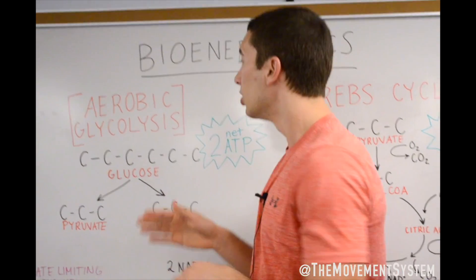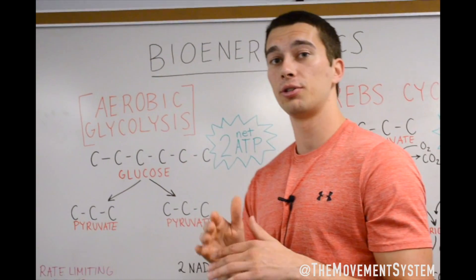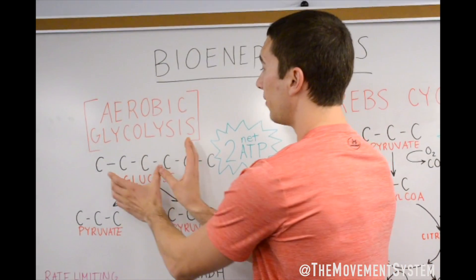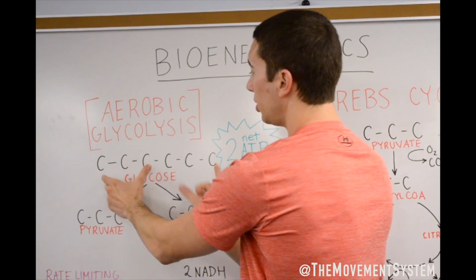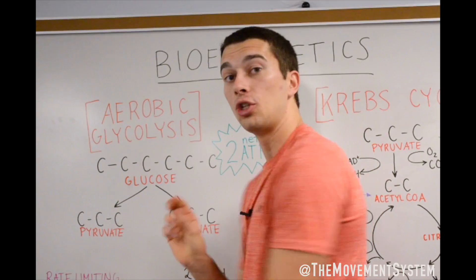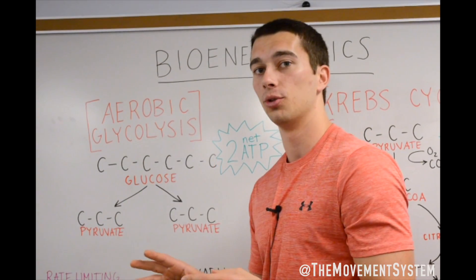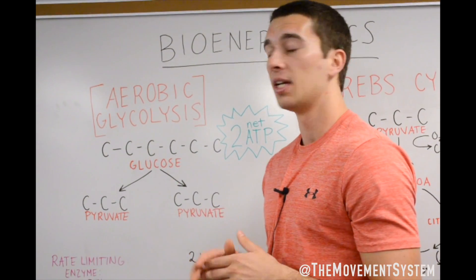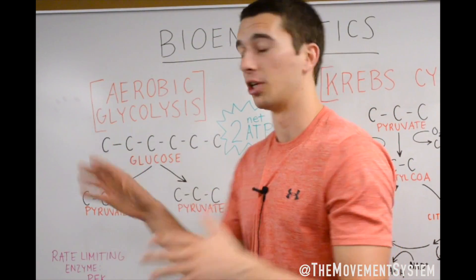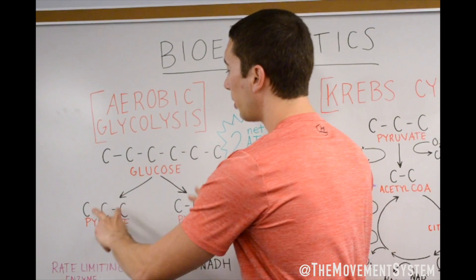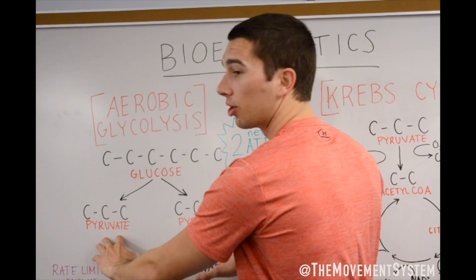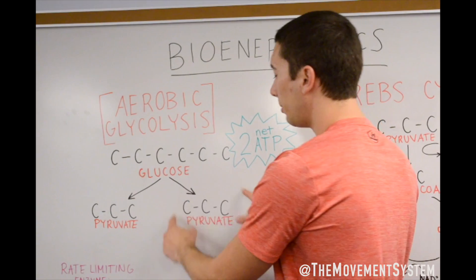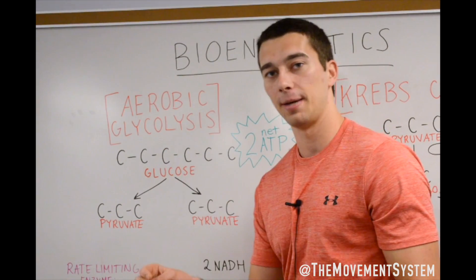So we're basically just cutting a glucose molecule in half. We have a six-carbon molecule here. We're just basically cutting it into two three-carbon molecules. So that's the whole process of glycolysis. There are some individual steps but this is the big picture. We have that six-carbon molecule. We're breaking down into two three-carbon molecules. We call that three-carbon molecule a pyruvate molecule.